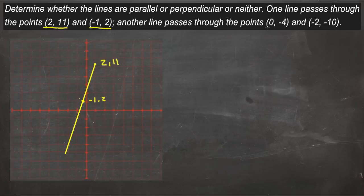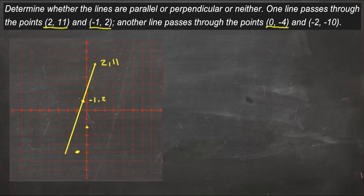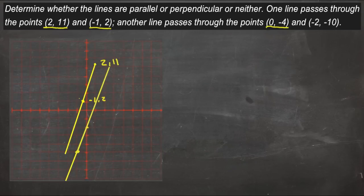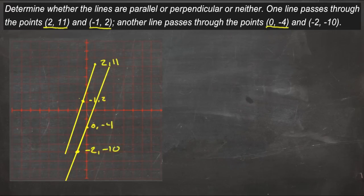Our other line passes through (0, -4) and (-2, -10). We plot those points and sketch that line in. These two lines look like they might be parallel, but we need to identify for sure. We mark the points (0, -4) and (-2, -10).